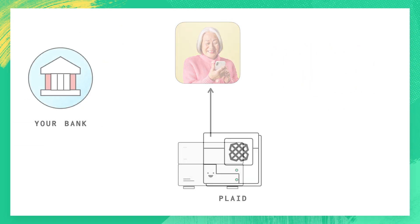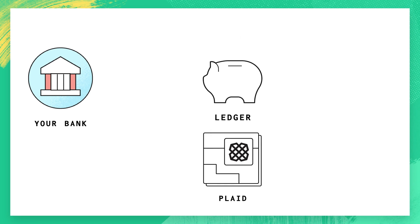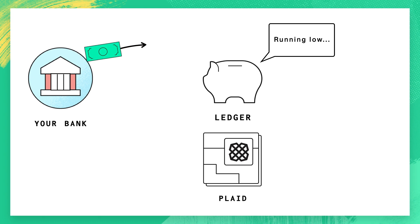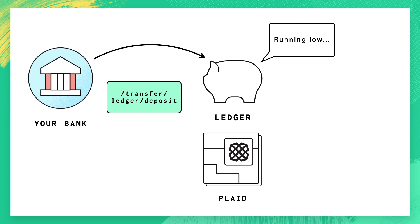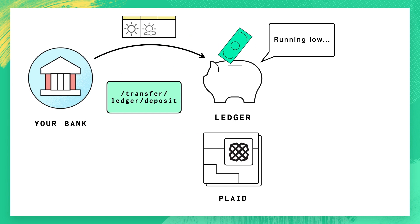To get started with Transfer, you'll create a ledger balance with us. This balance will contain the funds you'll be using for outgoing transfers. You can add funds to this ledger balance automatically when it hits certain minimums, or you can do it manually through the Plaid dashboard or an API call. Keep in mind that adding funds to your ledger balance typically takes three days, so give yourself plenty of buffer here.